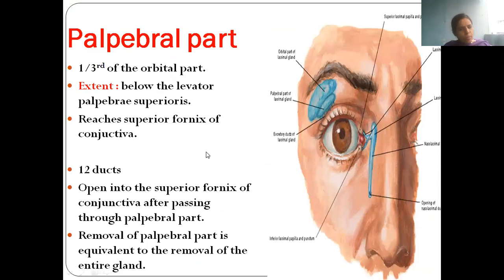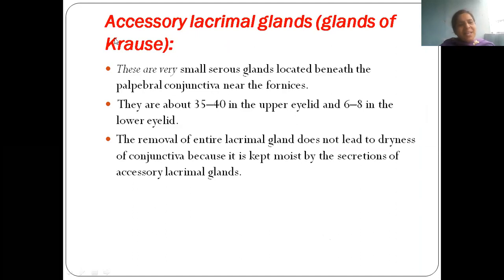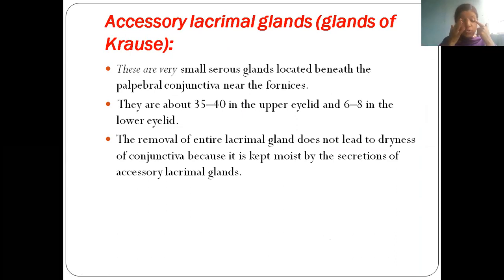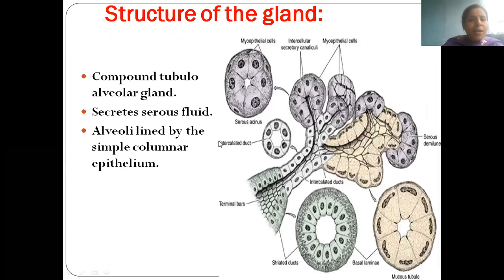If we remove the lacrimal gland due to clinical pathology, the eyeball will still be maintained in moist condition. This is because we have accessory lacrimal glands — very small, around 35 to 40 in number, situated very close to our eyelids. They take charge of keeping the eyeball moist.